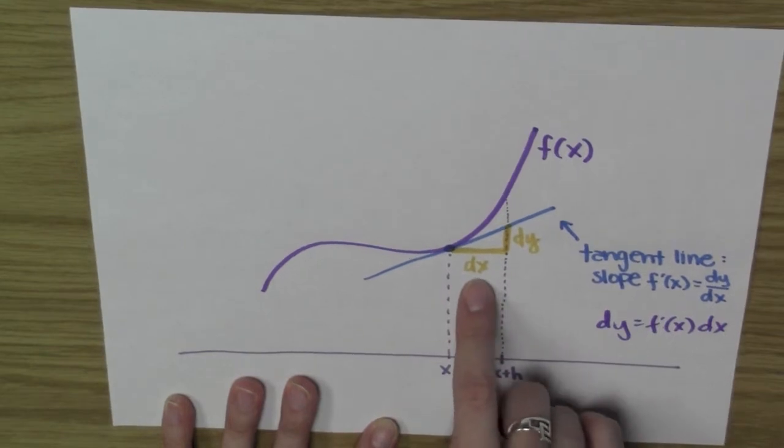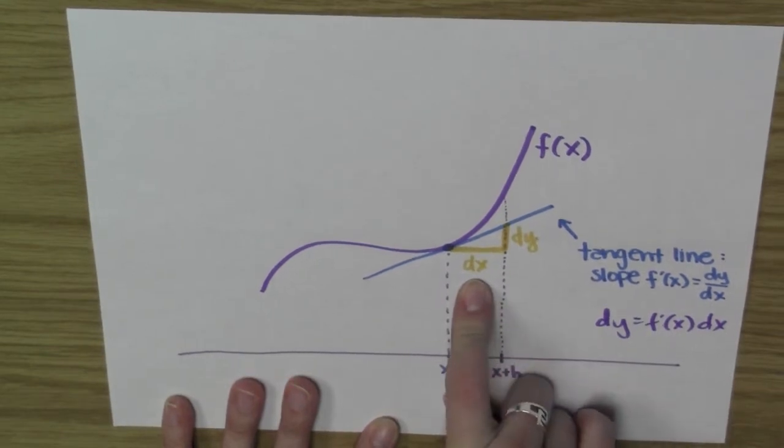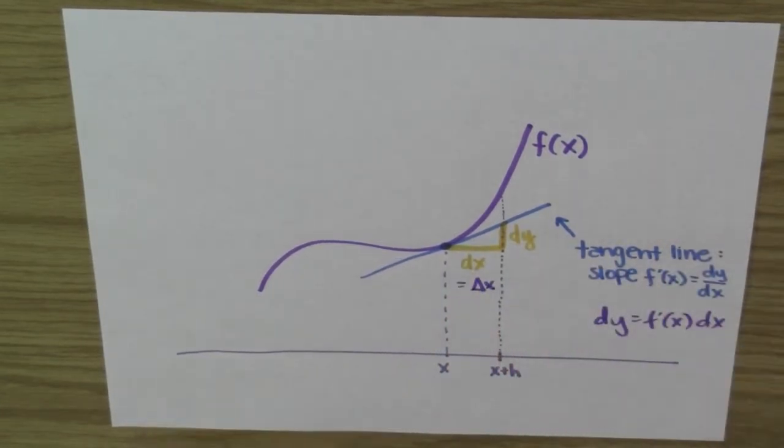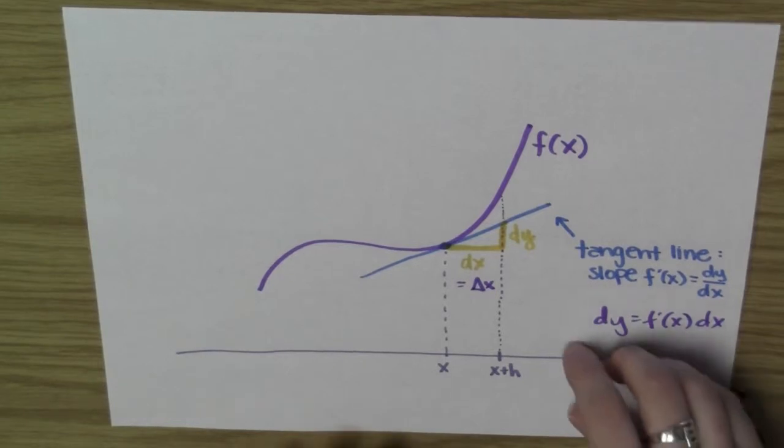How much did I change it? I changed it by dx. A lot of times some books will write this as delta x, and that is exactly the same thing in this case. So dx is the same thing as the change in x.